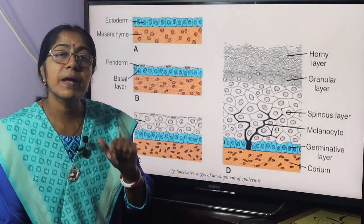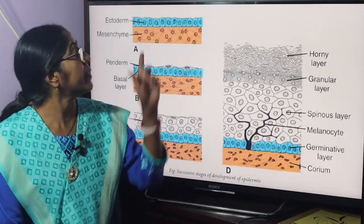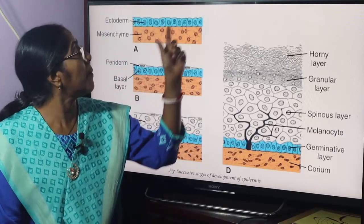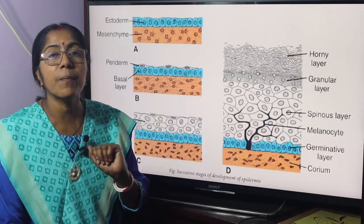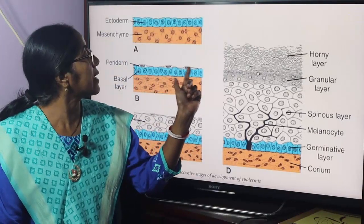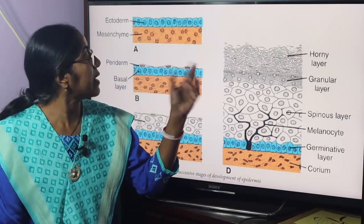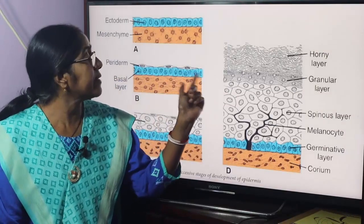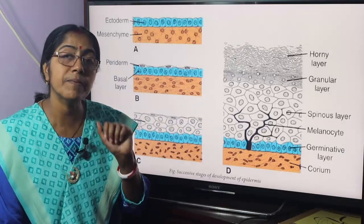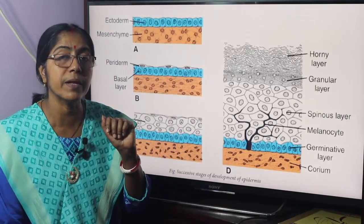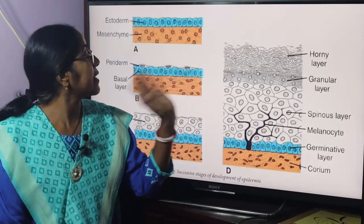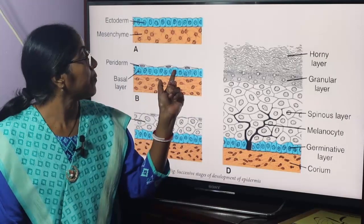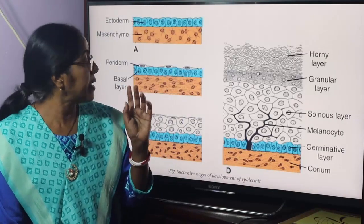The epidermis develops from surface ectoderm. Initially it is a single layer of columnar cells. From this, an outer flattened layer forms — the periderm or epitrichium — while the inner layer becomes the basal or germinative layer, whose cells are mitotically active.